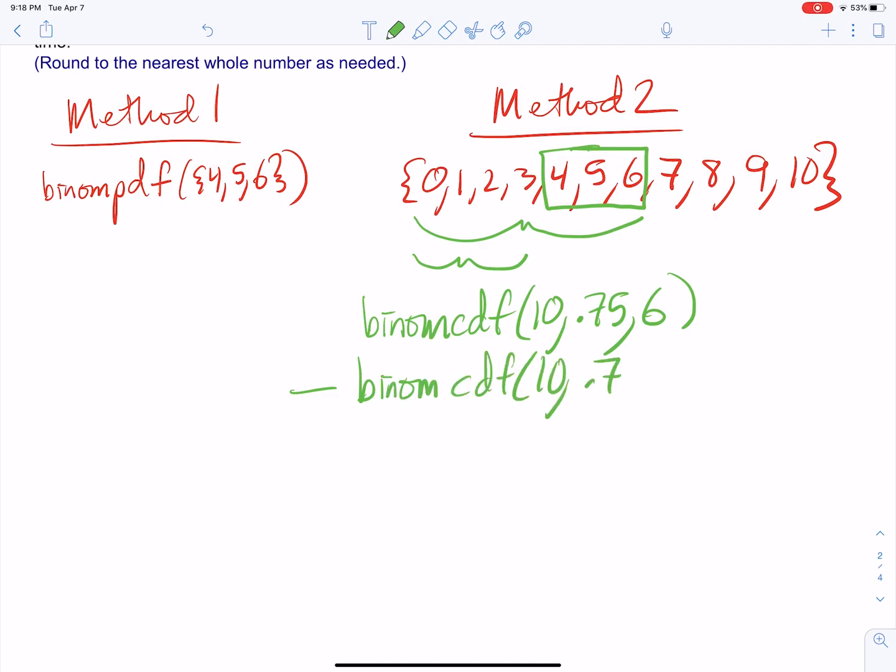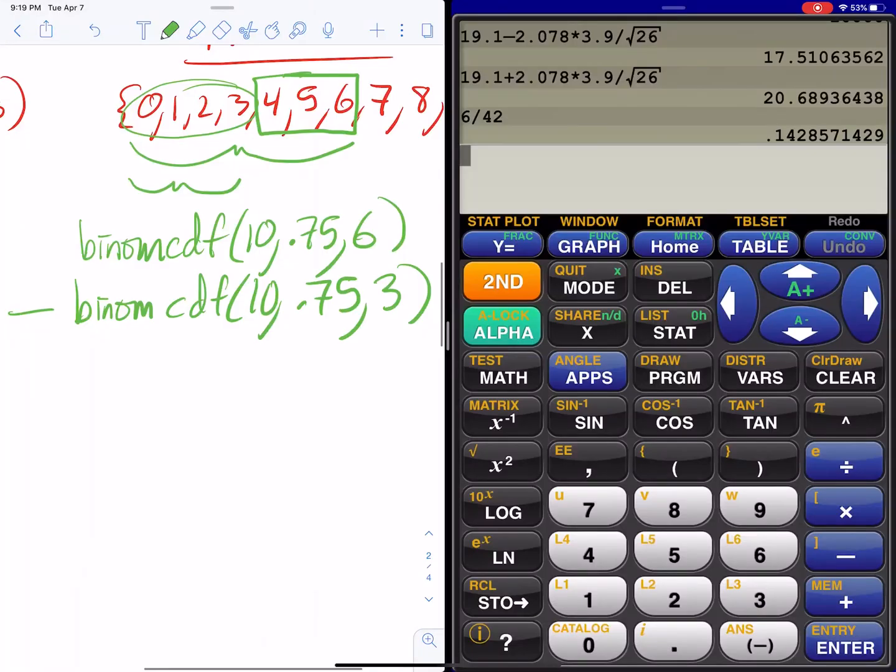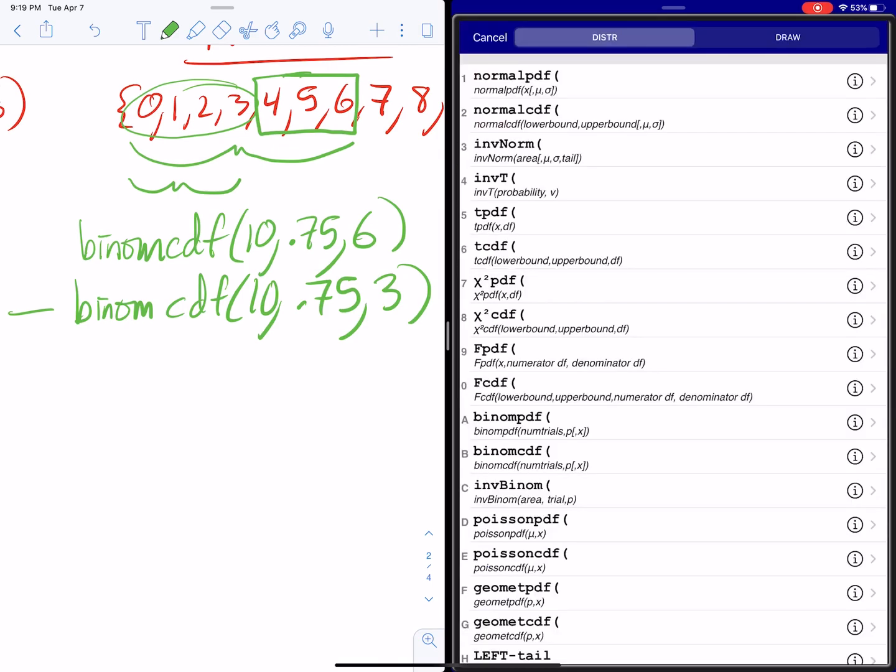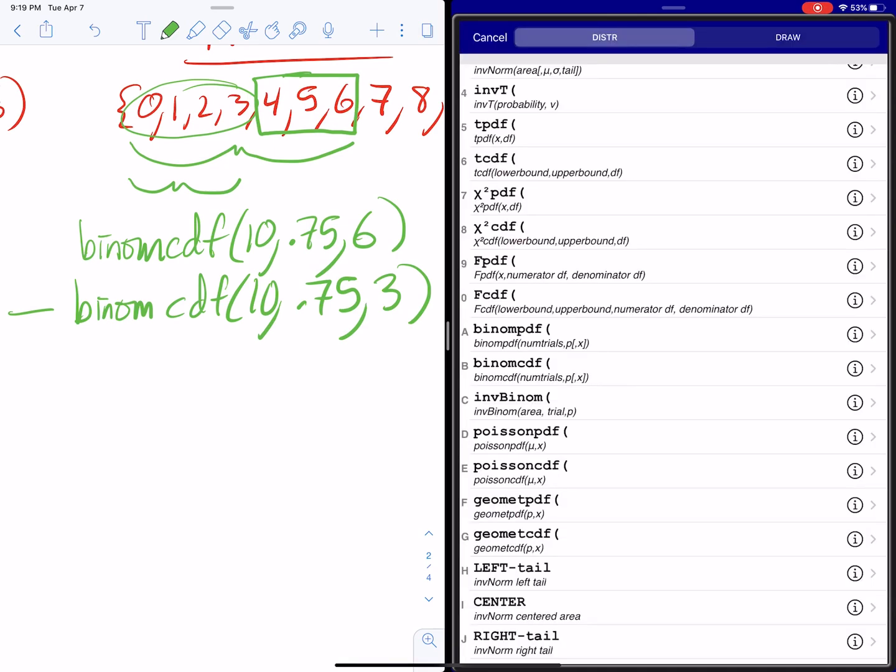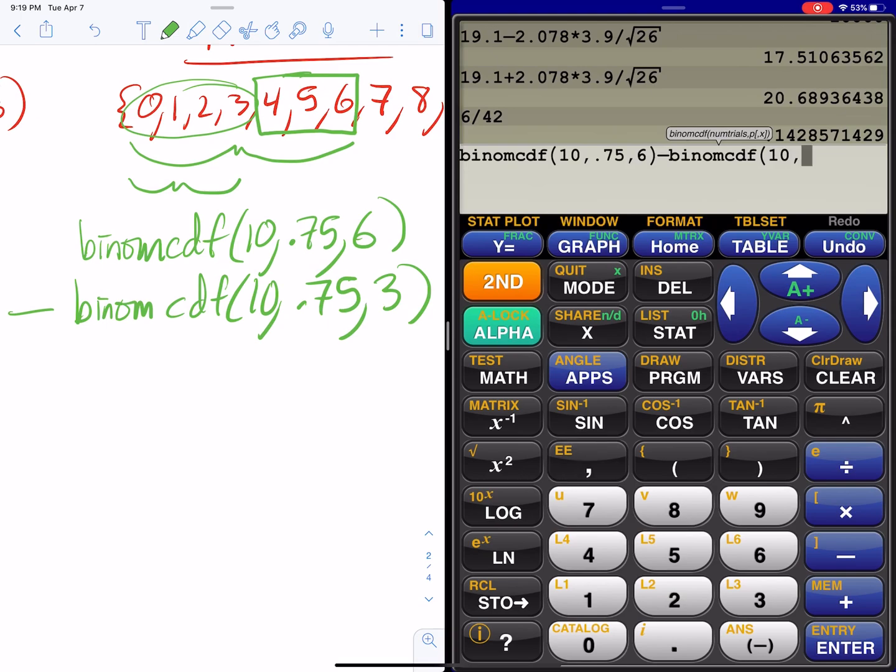I need to subtract out zero to three. So on a calculator, what does that look like? Second distribution—it's right below this arrow and it's to the left of clear—second distribution, binomcdf(10, 0.75, 6), minus second distribution, binomcdf(10, 0.75, 3).